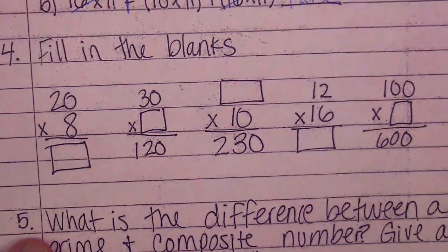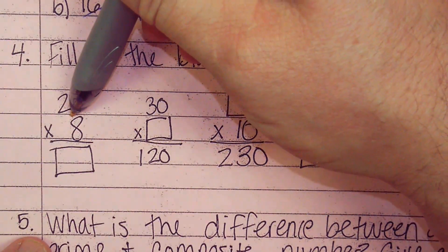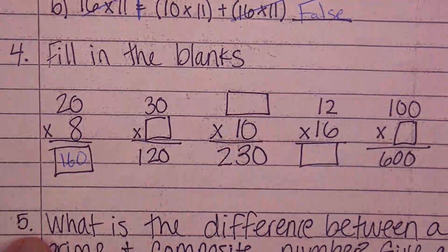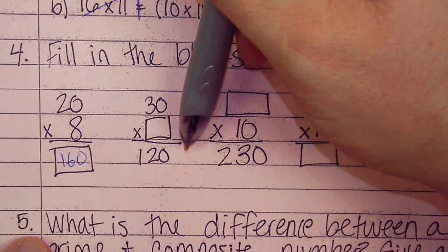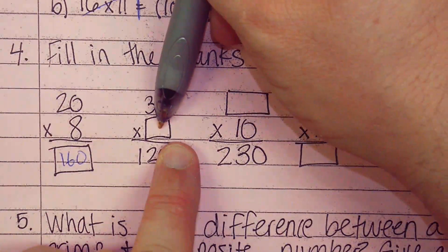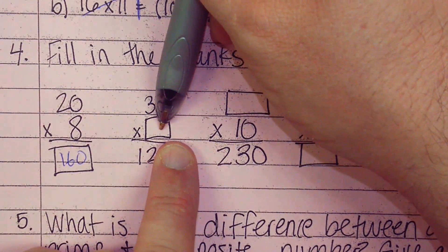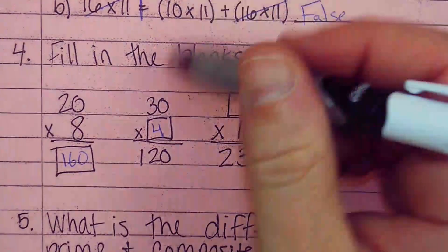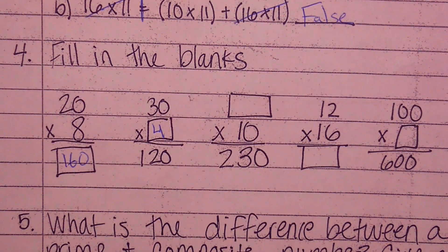Let's fill in these blanks. 20 times 8. Well, what's 2 times 8? 2 times 8 is 16. Place your 0 back on the end. Not too bad. 30 times something is 120. 3 times what is 12? See how I got rid of both of those zeros? 3 times something is 12. Well, 3 times 4 is 12. So 30 times 4 is 120.